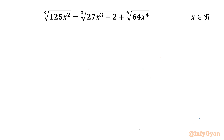Welcome to Inthigyan, my dear friends. In this video we are going to take up another challenging question from radical equations. It is cube root of 125x² equal to cube root of 27x³⁺² plus 6th root of 64x⁴, and we will be solving for real values of x. Let us get started by writing one powerful identity from surds or radicals.